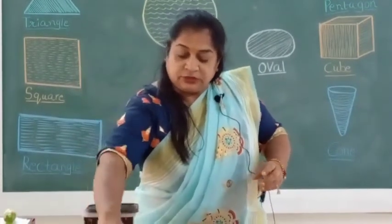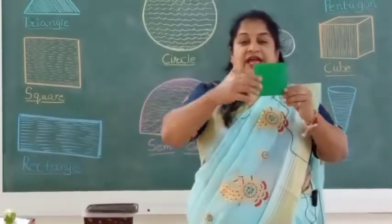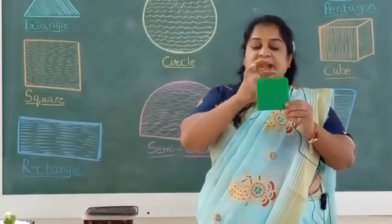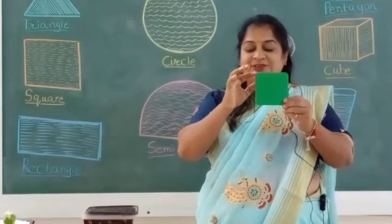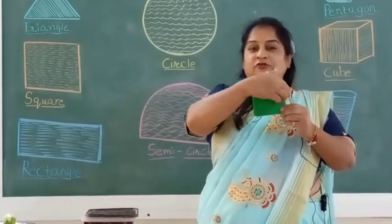Okay, now next shape is square. Square has four sides and four corners. One, two, three, four.